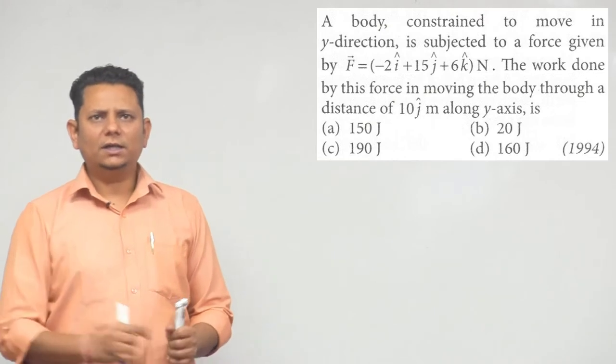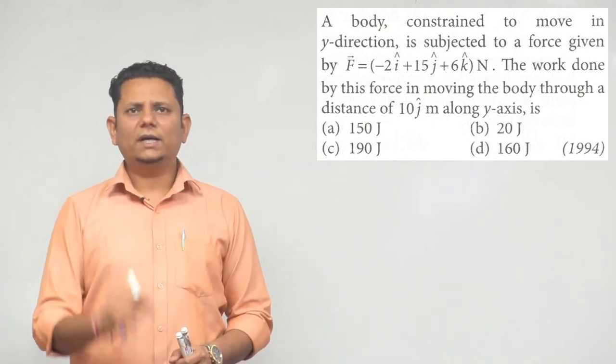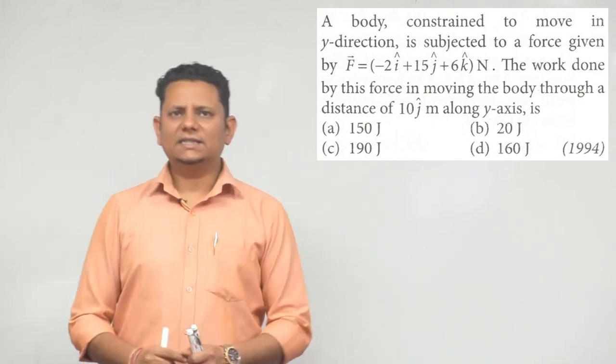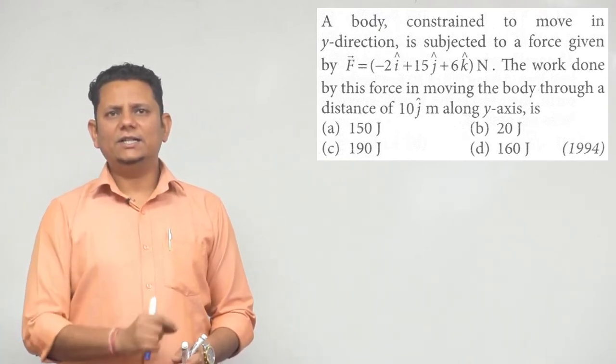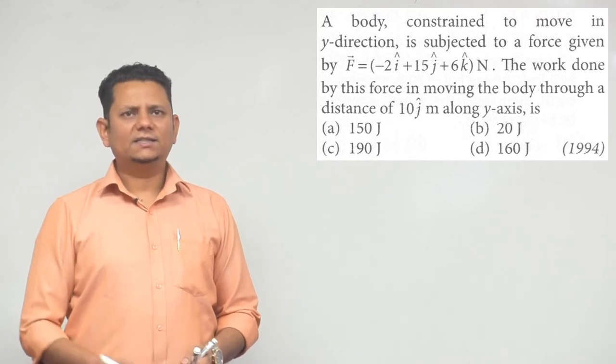Next question: A body constrained to move in y-direction is subjected to a force given by F = (-2i + 15j + 6k) N. The work done by this force in moving the body through a distance of 10j meter along y-axis will be: